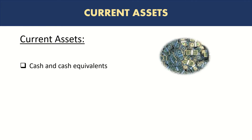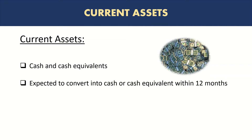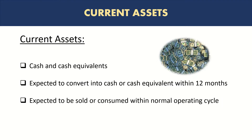Current assets: all cash and cash equivalents are considered as current assets. Cash equivalents are not really cash but very short-term investments, or any assets that can be quickly converted into cash if required. Current assets are expected to be converted into cash or cash equivalents within 12 months. Similarly, any assets expected to be sold or consumed within the normal operating cycle of the business.